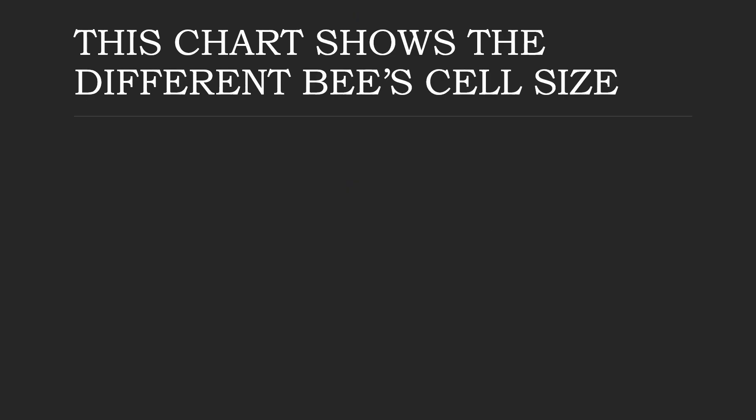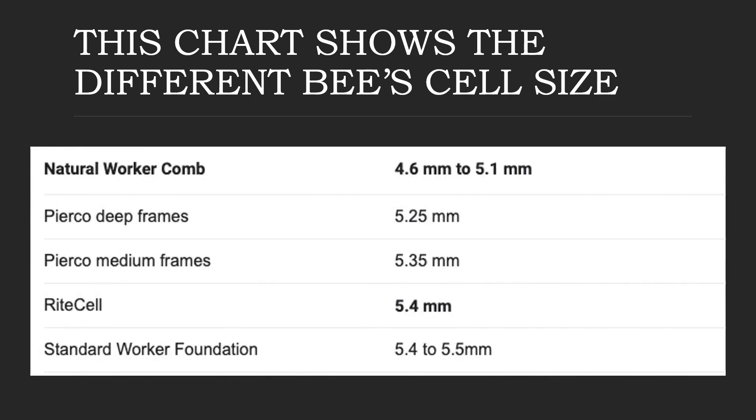This chart shows the different bees' cell size. A natural worker comb is 4.6 mm to 5.1 mm. A Pierco deep frames are 5.25 mm. A Pierco medium frames are 5.35 mm. A RiteCell is 5.4 mm. A standard worker foundation is 5.4 to 5.5 mm.